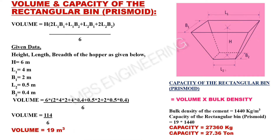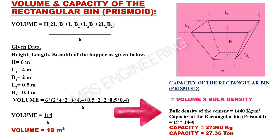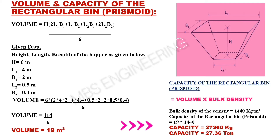Next, we learn about how to calculate the capacity of the rectangular bin or prismoid. Volume is multiplied by bulk density. Assuming the bulk density of cement is 1,440 kilograms per cubic meter, the capacity is 19 multiplied by 1,440. The prismoid has a capacity of 27,360 kilograms, or 27.36 tons.